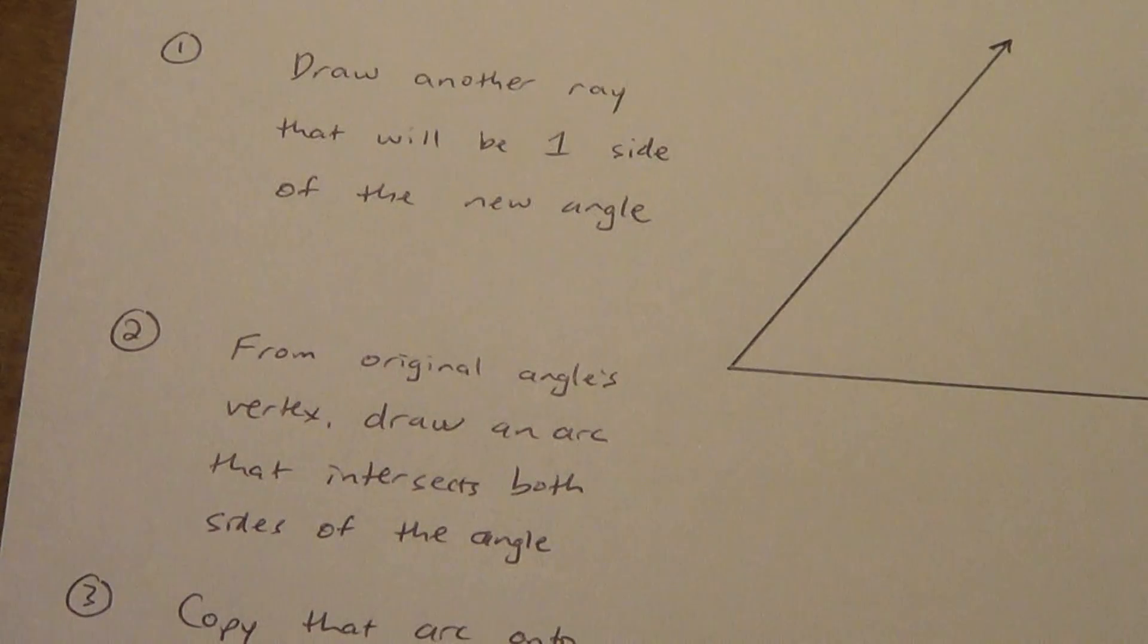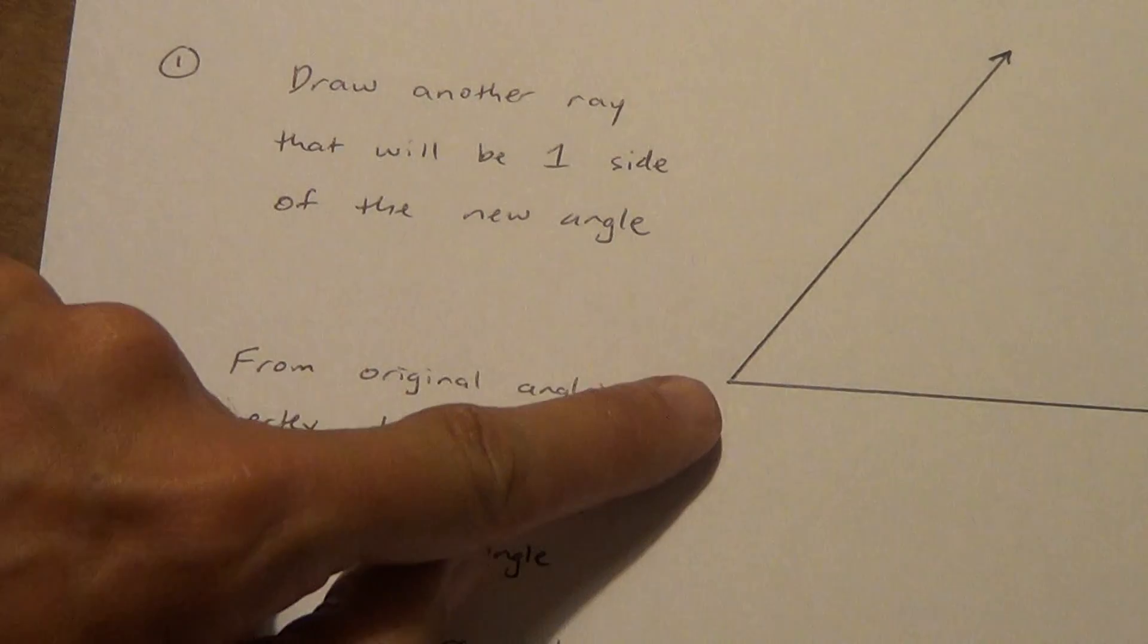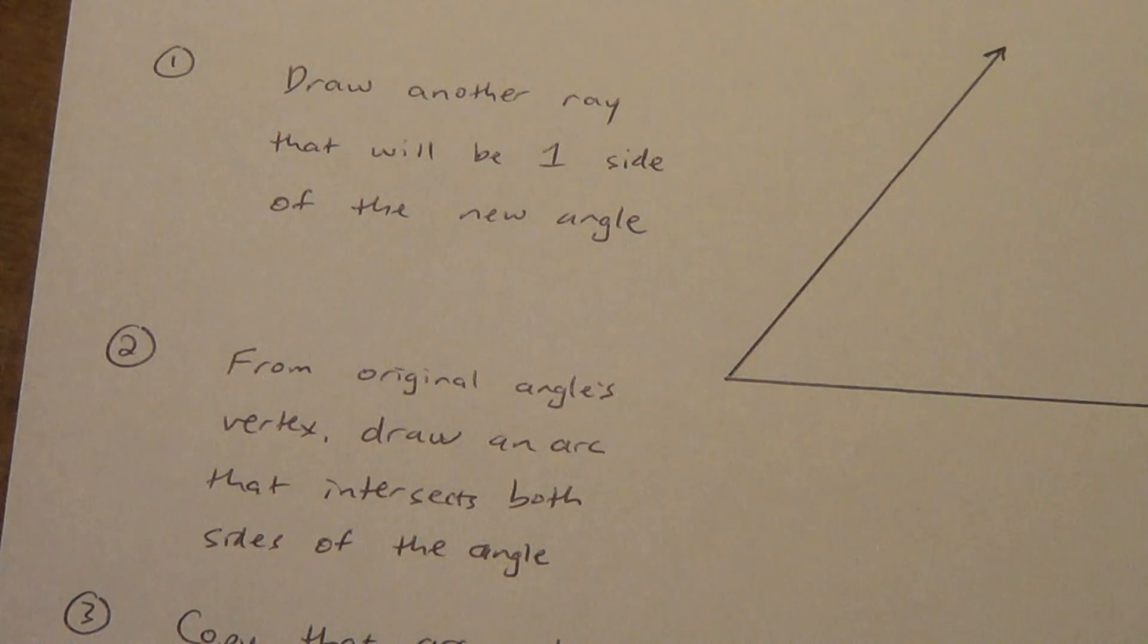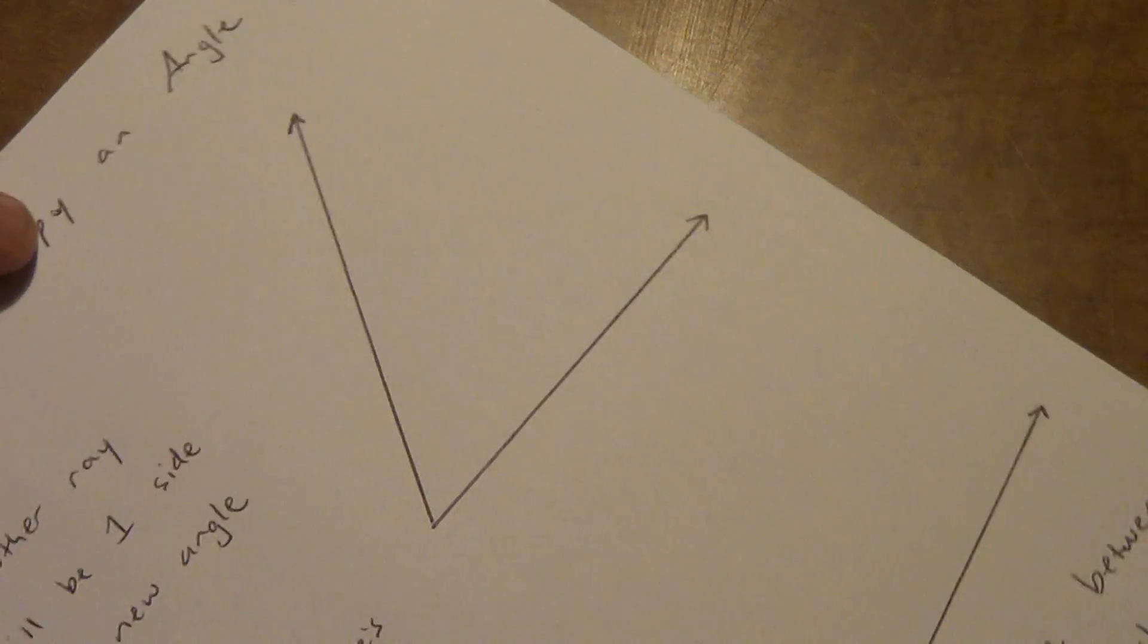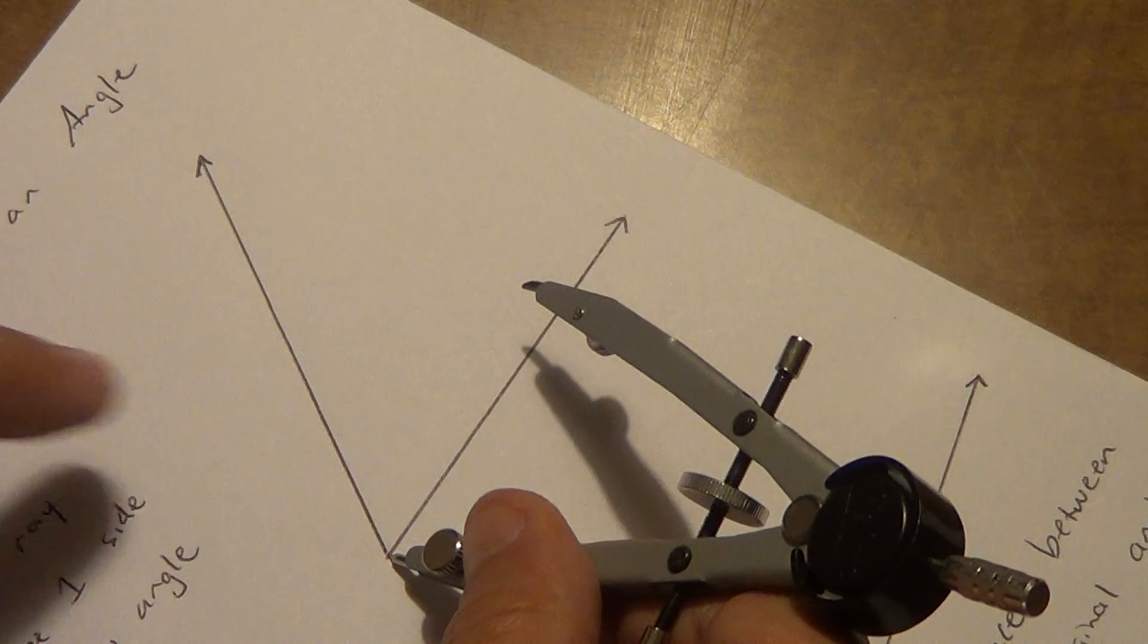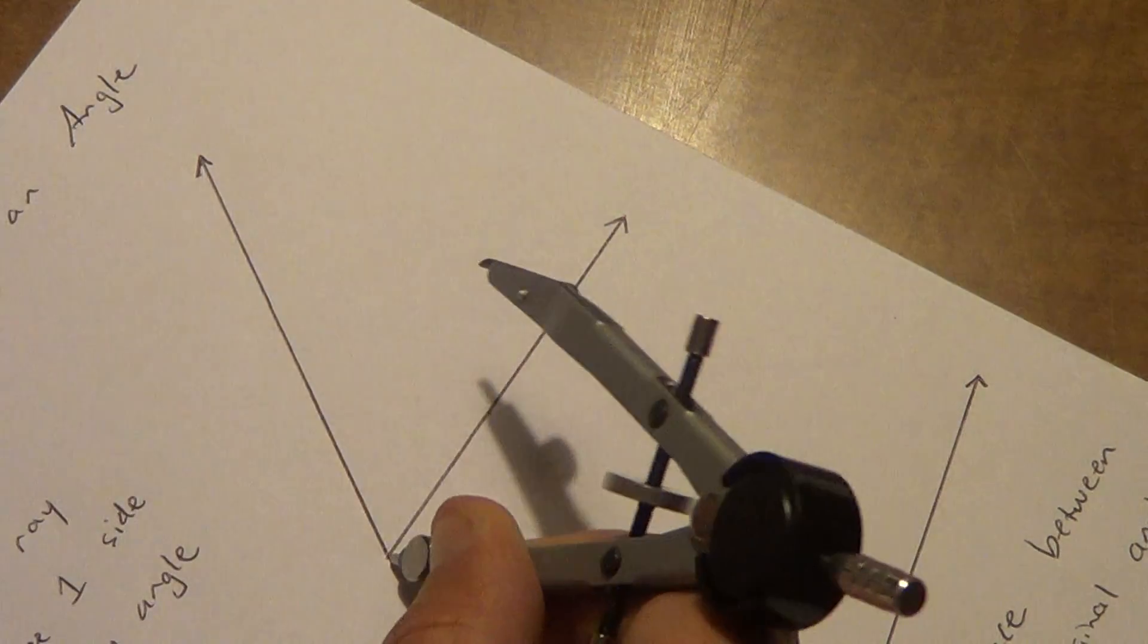Step two. From the original angle's vertex—remember vertex is that point right there—draw an arc that intersects both sides of the angle. Don't make this arc real small, you don't have to make it super big, but don't make it really small. If you make it really small, this can be a little bit difficult. So put my pivot point right there on the vertex, and I'm going to draw an arc that touches both sides of this angle.